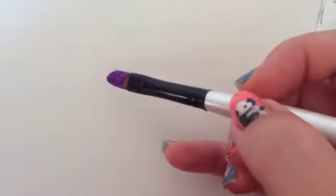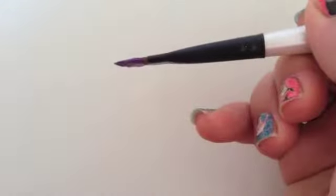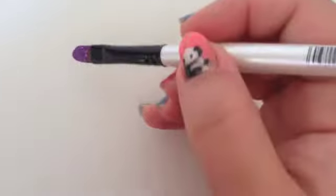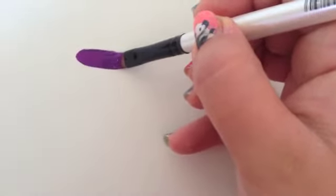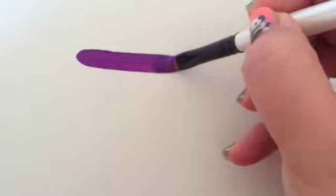Okay, here's the filbert. The filbert always is going to have that small rounded edge when you first lay it down.